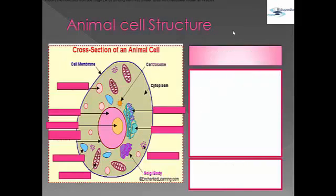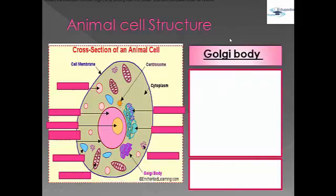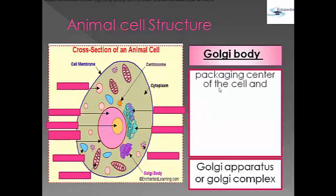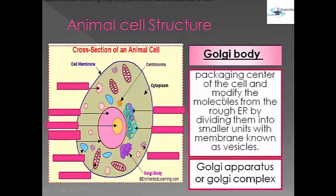After cytoplasm, we have the Golgi body, also called the Golgi apparatus or Golgi complex. It is the packaging center of the cell, and it modifies molecules from the rough ER by dividing them into smaller units with membranes known as vesicles.